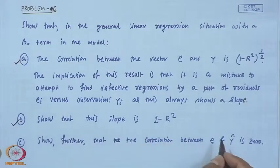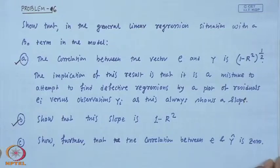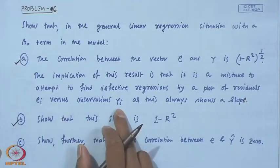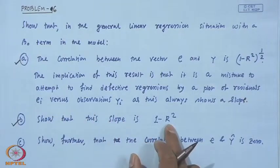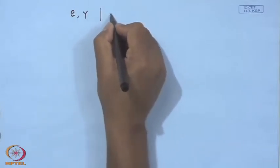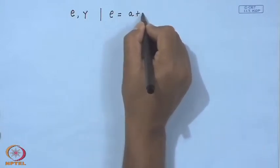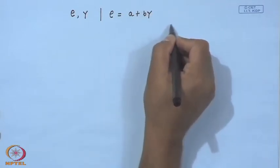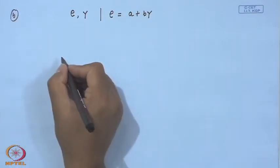Part B says to show that the slope is 1 minus R-squared. If you fit a linear relationship E = A + By between E and y, the slope B is going to be 1 minus R-squared. We know that B equals (E'y) / (y'y) — similar to how β₁ = S_xy / S_xx in simple regression.